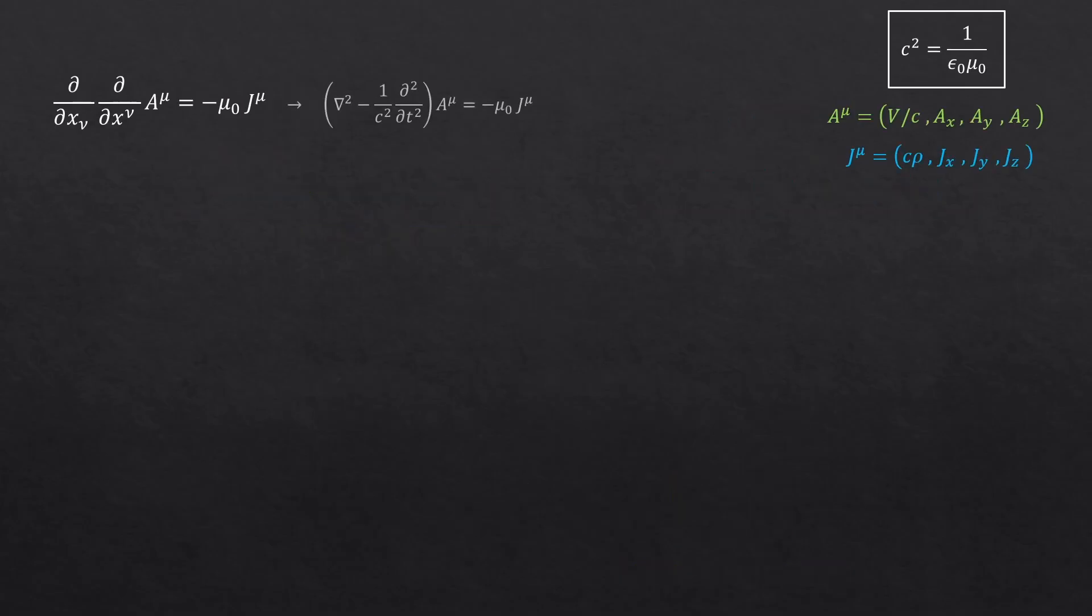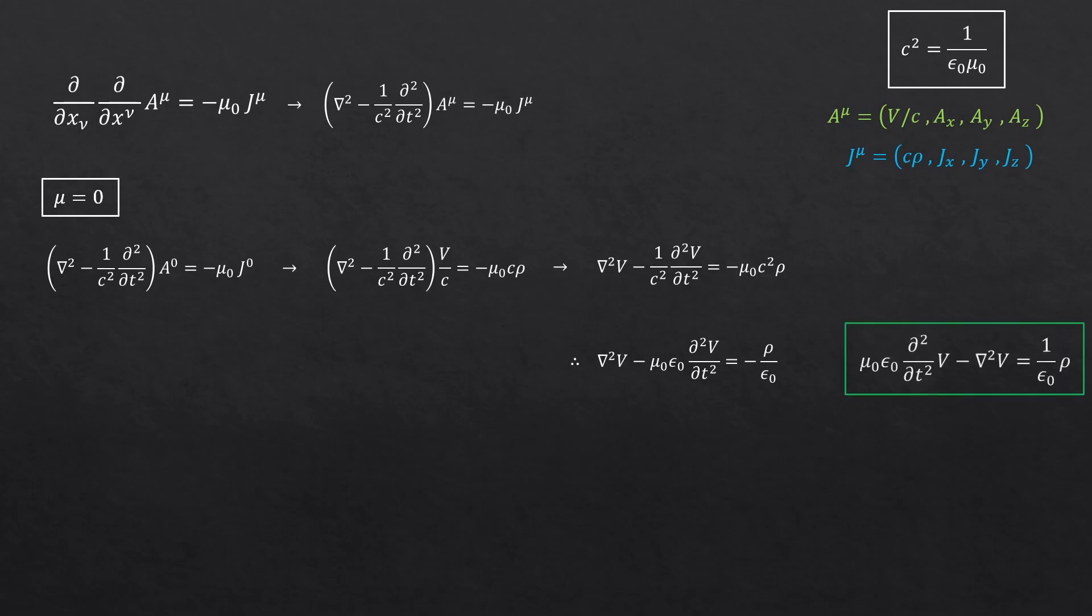Alright, so this equation should be this. First, let's consider what happens when the index mu is zero. So we pick A0 and J0 elements from here. Since c squared is 1 over epsilon naught mu naught, we end up with this expression. Look, we got one of the two Maxwell's equations, written in terms of the potentials. I just flipped all the signs here.